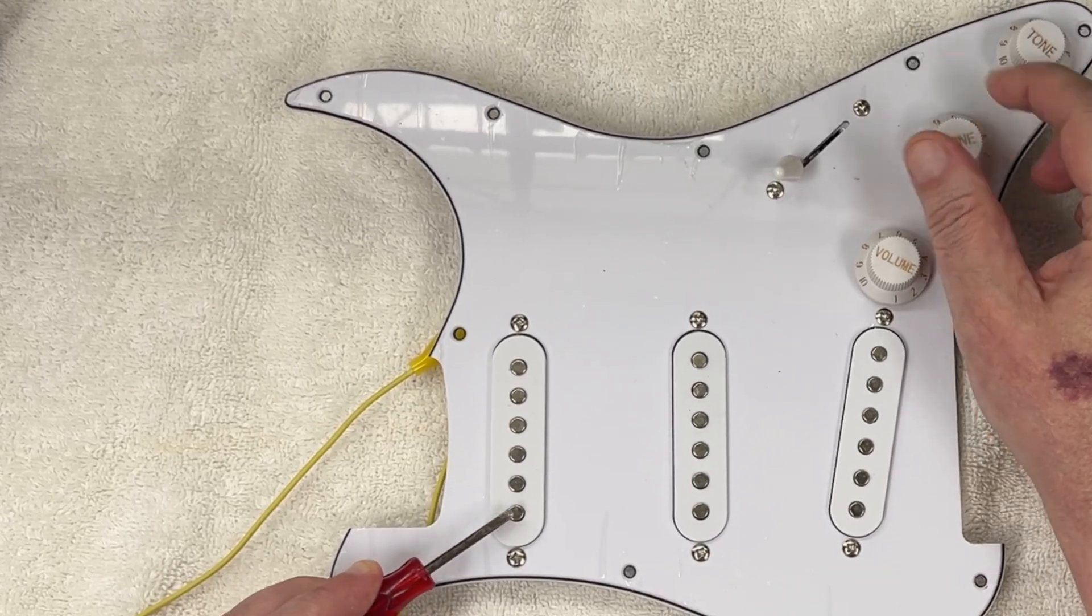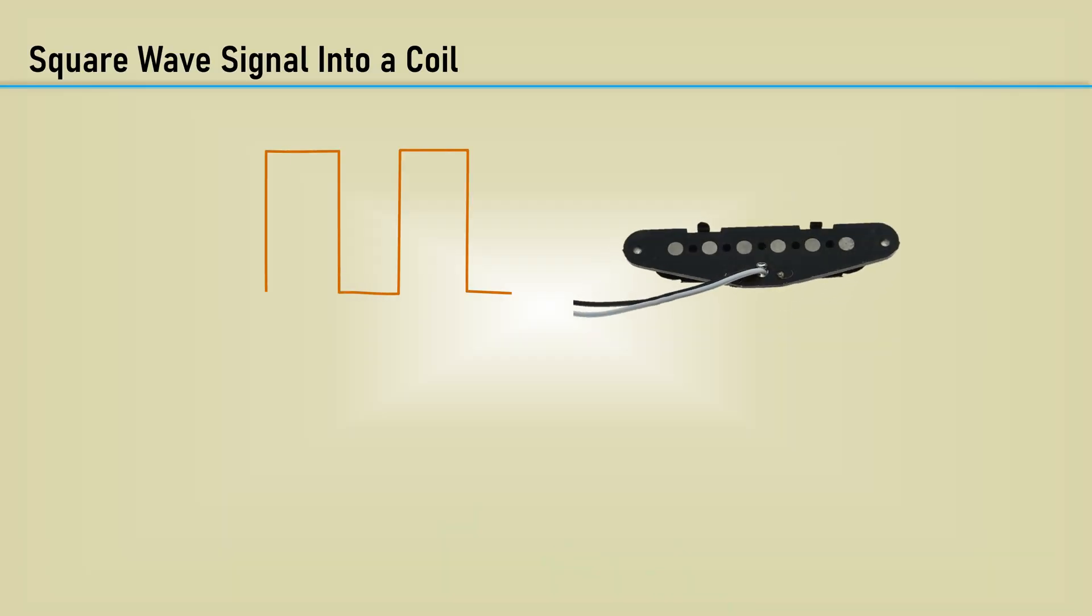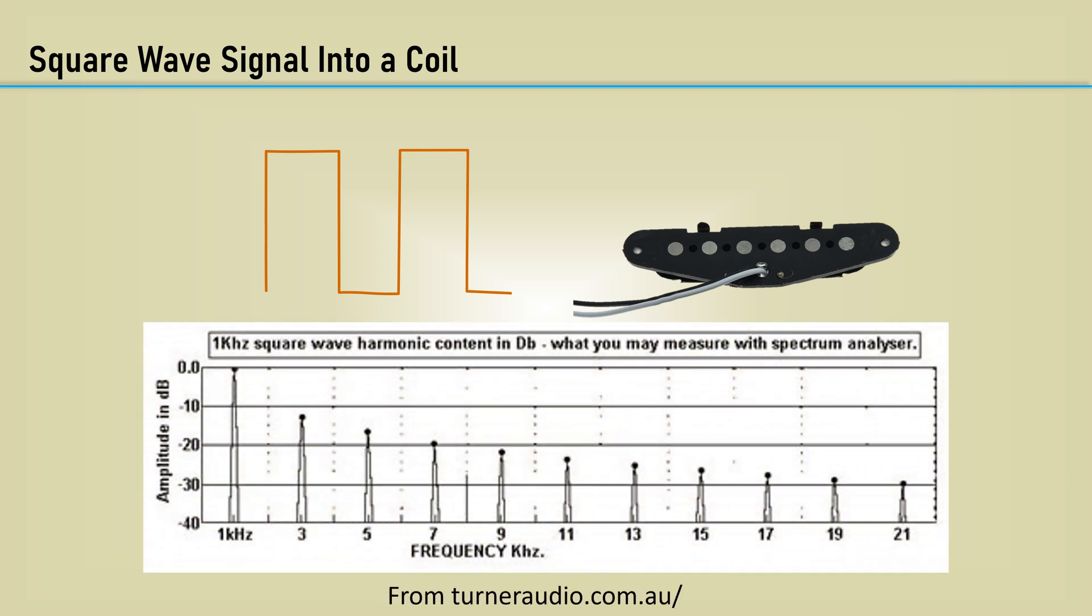It doesn't sound that much different with the tone control turned down. Putting a square wave signal into a coil generates odd order harmonics. This makes a wide band signal to help with the testing of the tone controls.